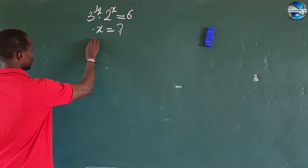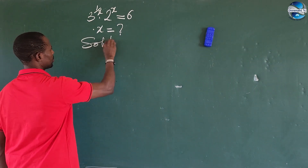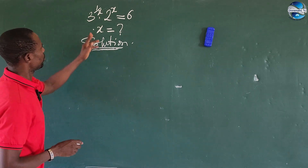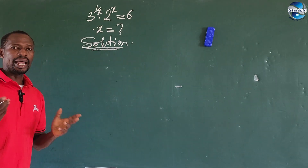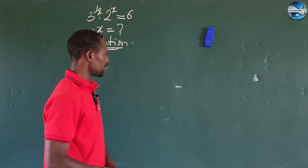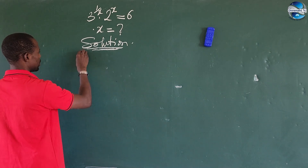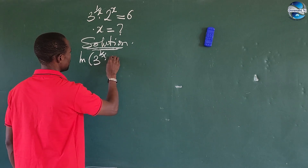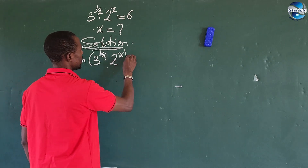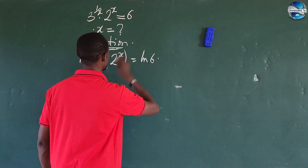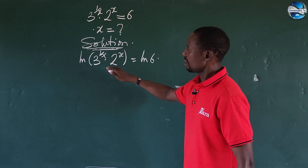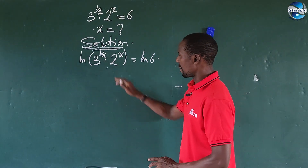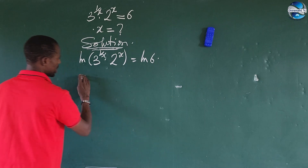We're going to solve this systematically. The first thing we're going to do is align both sides of the equation, so we take the natural log. We have ln of 3 to the power of 1 over x, times 2 to the power of x, equals ln of 6.